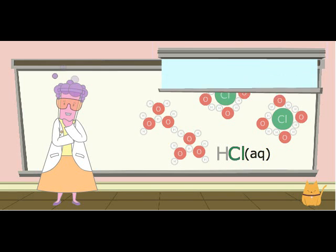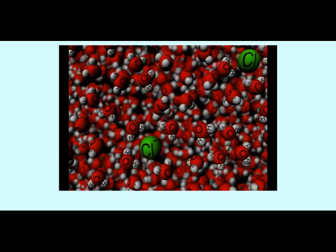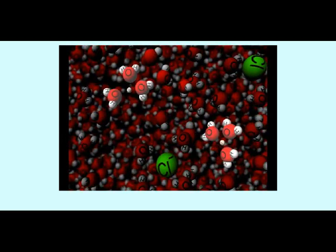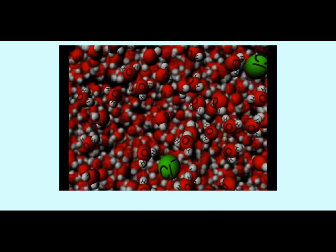How might this look at the atomic level? Notice how the acid is completely dissociated into hydrogen ions and chloride ions that are surrounded by water molecules.